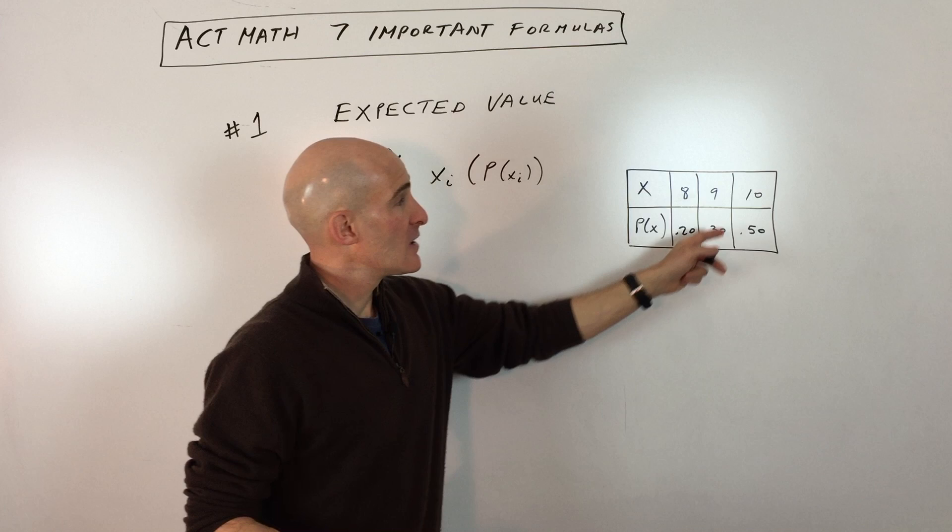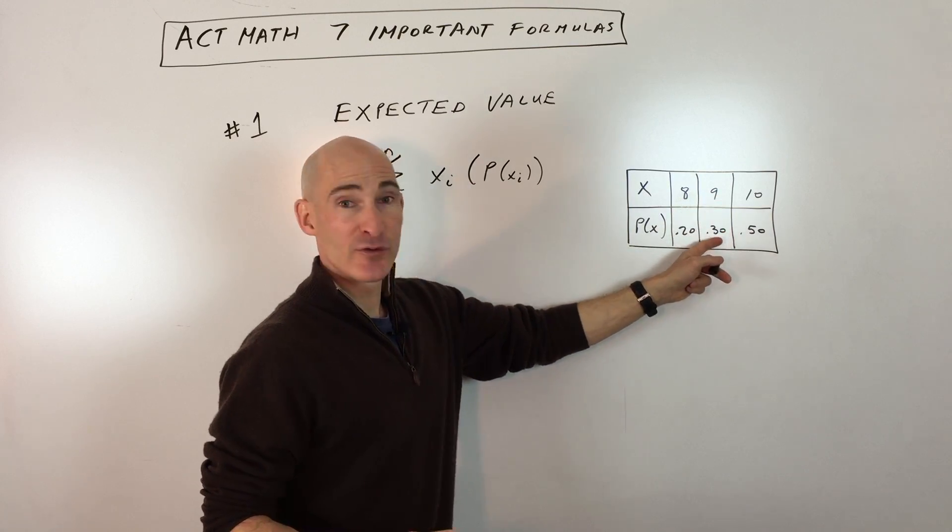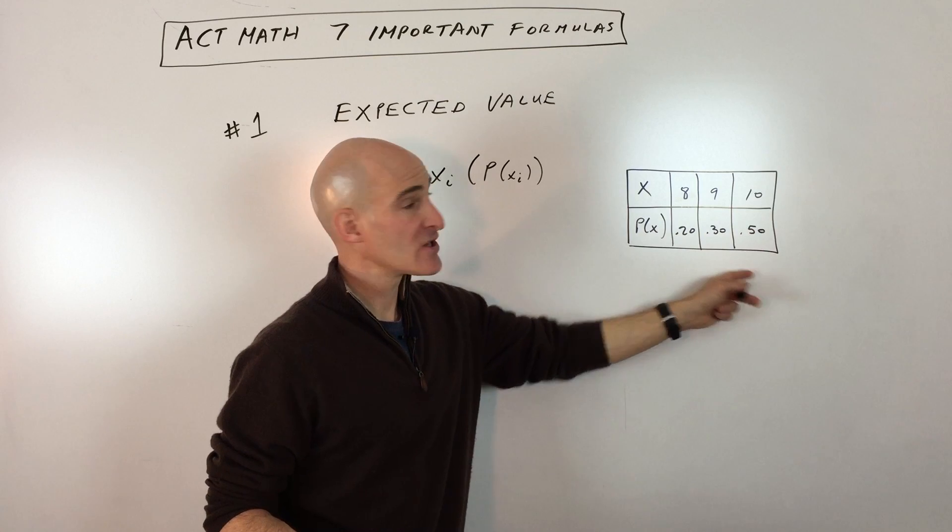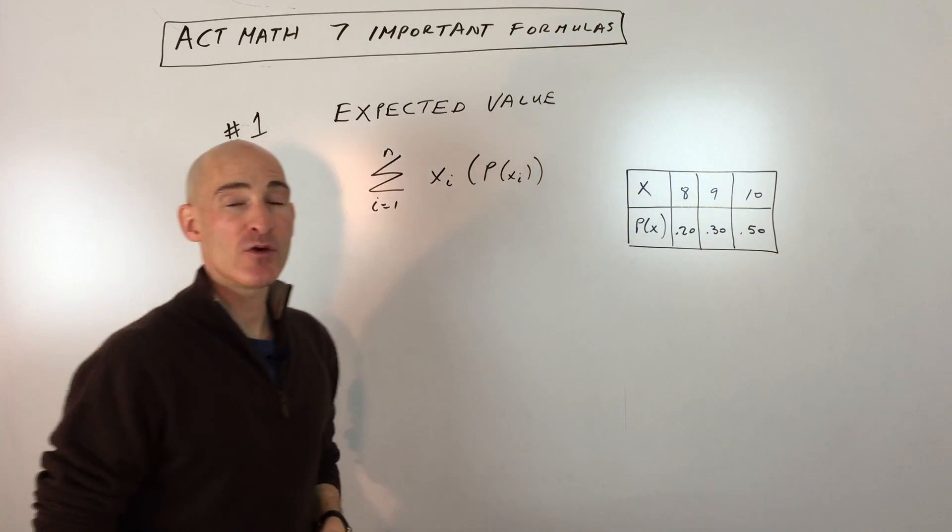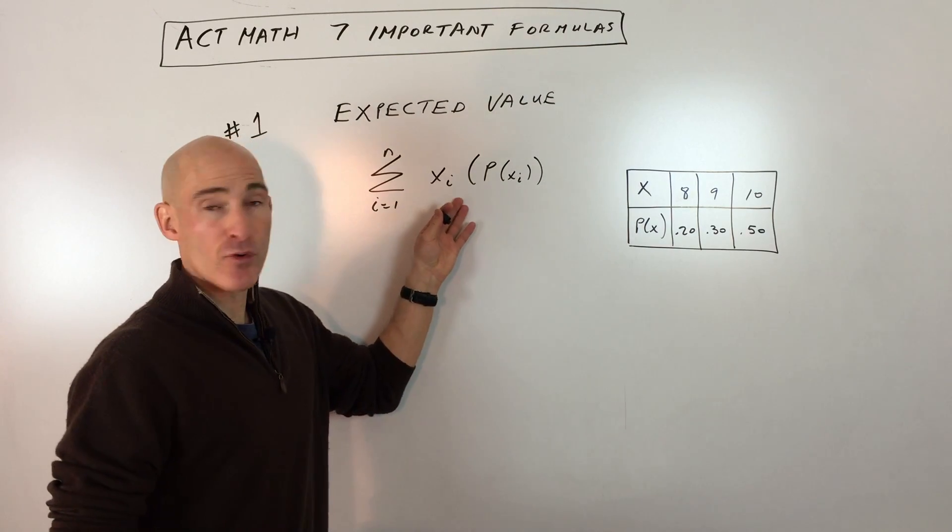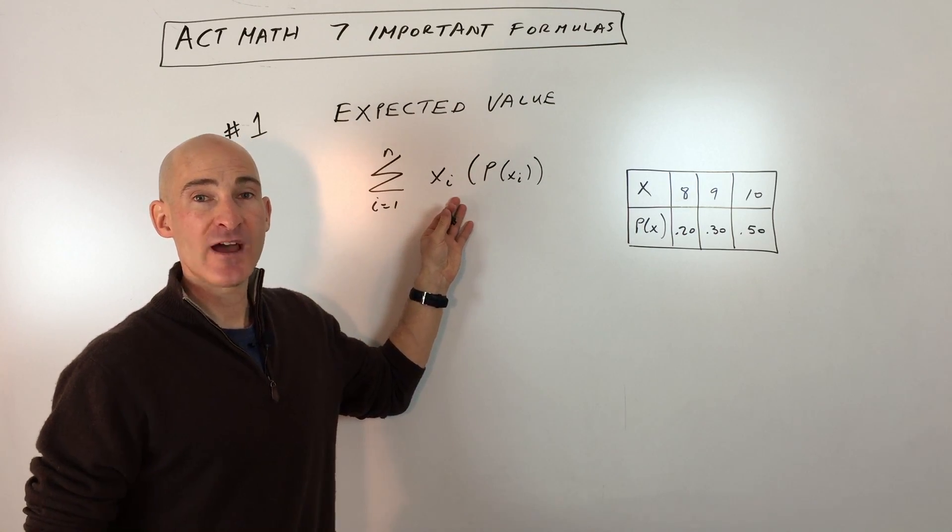Eight times 0.20, you would multiply this outcome, nine times the probability that it happens, and then 10 times the probability that it occurs. And then you would add those together, and that would be what you would expect to get on average over a long number of trials. So this is an important formula to know for the ACT expected value.